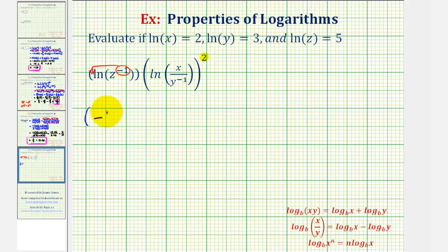So we have negative one natural log z. And now for the second set of parentheses, which is still going to be squared, we want to expand natural log x divided by y raised to the power of negative one.